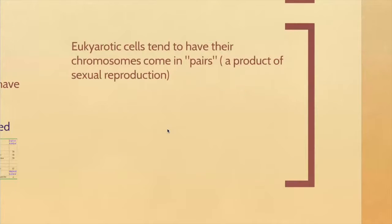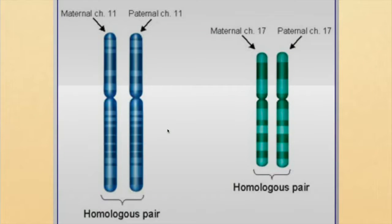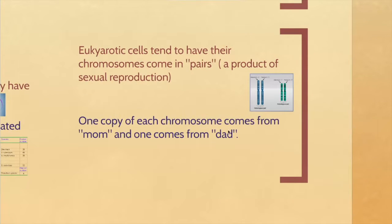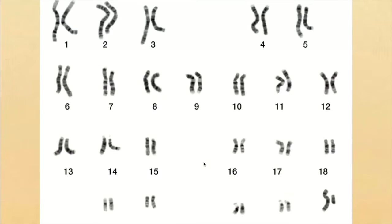Eukaryotic cells have their chromosomes in pairs, which comes from sexual reproduction — mom and dad each donate their chromosomes equally. So an organism might have two pairs, meaning four chromosomes total: one chromosome from mom and one from dad for each pair. For humans, you get one copy of each chromosome from mom and one copy from dad. Humans have 46 chromosomes in pairs, so they actually have 23 pairs, numbered 1 through 23.